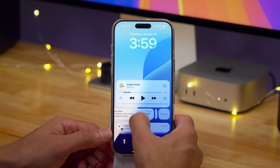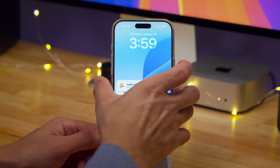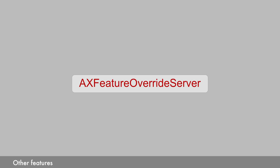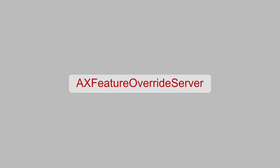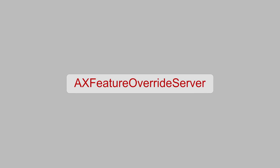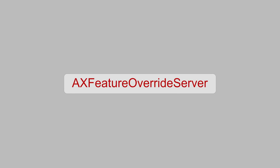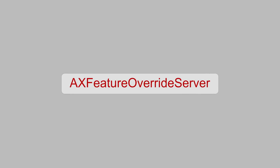The summarize notification changes were the big update in beta 3, but there are some other things lying beneath the surface. One thing we found was a new AX feature override server component, and we think this may give users the ability to toggle accessibility features on and off temporarily. This could be a developer tool or it may hint at an upcoming addition to iOS accessibility, which is already world-class.